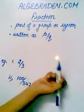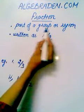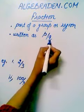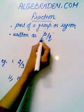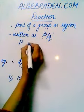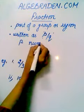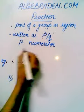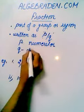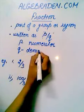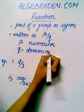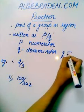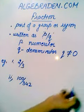Fraction. A fraction is a part of a group or a region. It is written as P over Q, where P is the numerator and Q is the denominator. Q is never equal to 0.